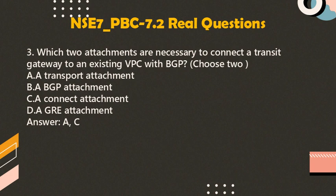Question 3: Which two attachments are necessary to connect a transit gateway to an existing VPC with BGP? Choose two. A. A Transport Attachment. B. A BGP Attachment. C. A Connect Attachment. D. A GRE Attachment. Answer: A, C.